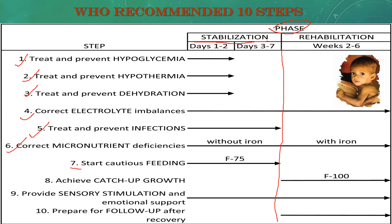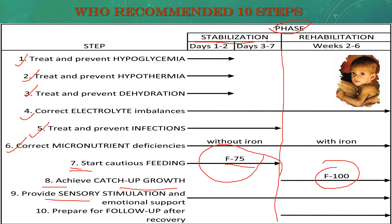Feeding in the stabilization phase uses low-energy, low-protein starter food (F75). In the rehabilitation phase, high-energy food (F100, providing 100 kcal per 100 g) is used to achieve catch-up growth. Sensory stimulation and emotional support are important components. A follow-up and discharge plan is prepared from the second week onward.